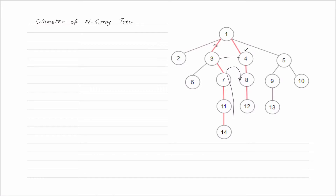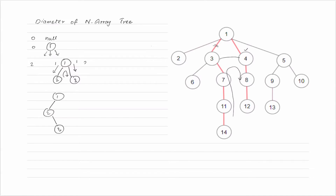Let's understand in a simple way. If there is nothing, we have zero diameter. If there is one node only, the diameter is zero because there is nothing on its left or right. Suppose one has two child nodes — two and three. In this case, height on the left is one and height on the right is one, so diameter will be two. Take another example: one has two, three, and four. The height from one branch will be two and height from the other will be one, so diameter will be three.